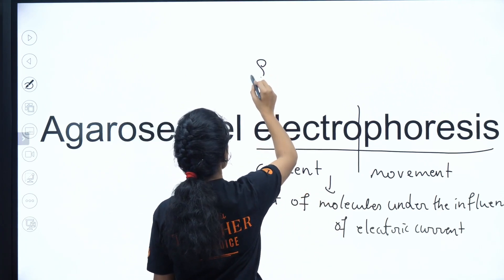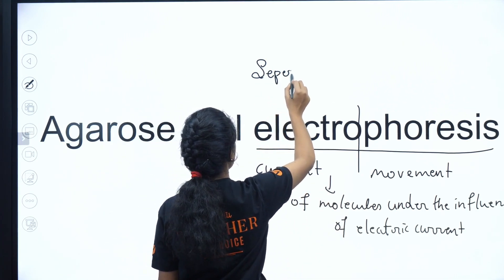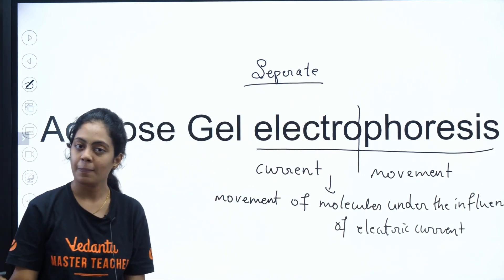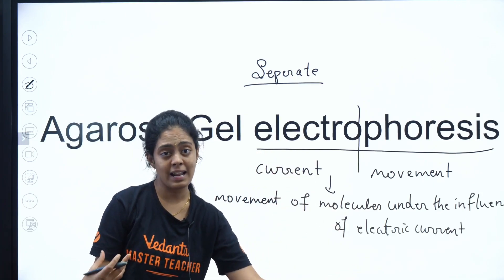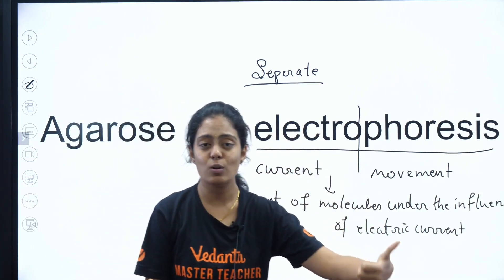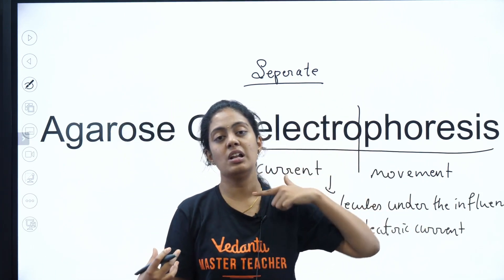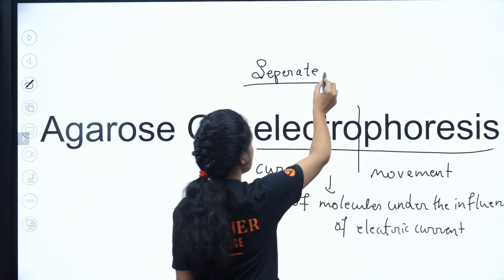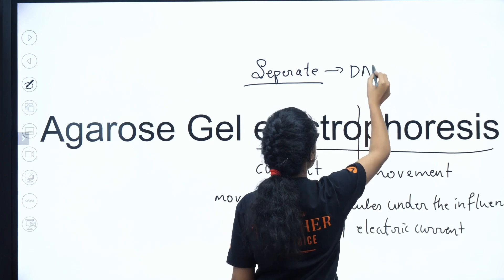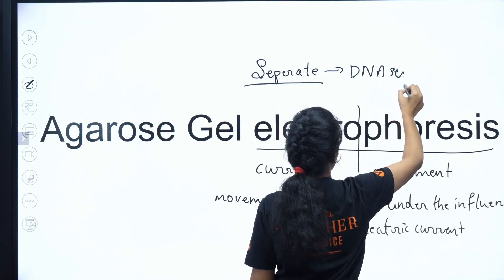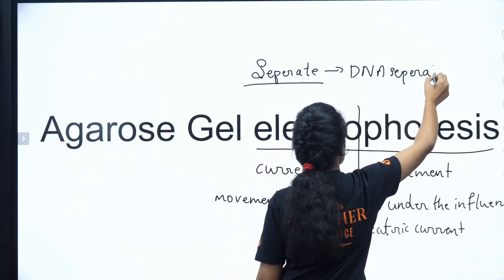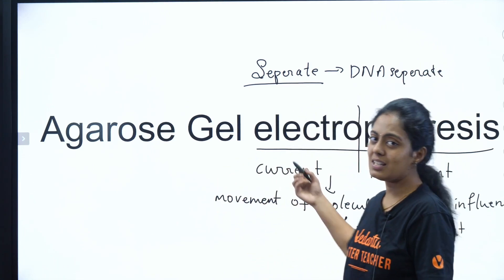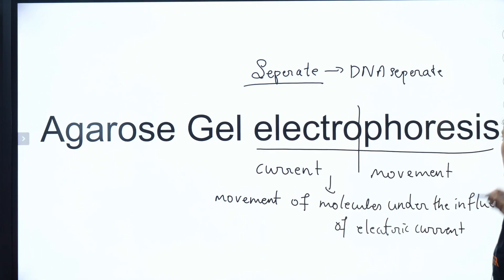We use electrophoresis to separate molecules. In agarose gel electrophoresis, there are different types — agarose gel electrophoresis, polyacrylamide gel electrophoresis. In agarose gel electrophoresis, we use it in order to separate DNA. When you have a mixture of DNA and you want to separate it, that's when you use agarose gel electrophoresis.